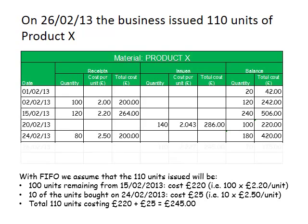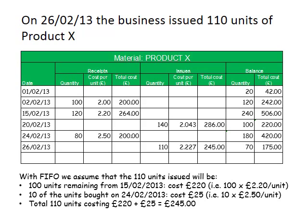We can now enter the information into our stock card. On the 26th of February, 110 units will be issued. The total cost of those units is £245, and we can calculate a cost per unit of £245 divided by 110 units, giving approximately £2.227 per unit. Lastly, we calculate the balance remaining: we had 180 units before this transaction, we've issued 110, which leaves us with 70 units. In terms of cost, we had £420 before this transaction and used up £245, leaving us with £175 in stock.